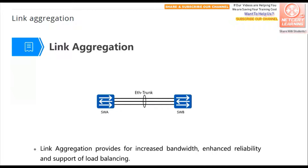This is the concept of link aggregation. When we use link aggregation, two or more physical Ethernet links are bound together to form one logical link, forwarding data between these two switches at the same time. The bandwidth between these two switches will increase. For example, if each link is gigabit Ethernet and there are three links, then there is three gigabits of bandwidth between these two switches.